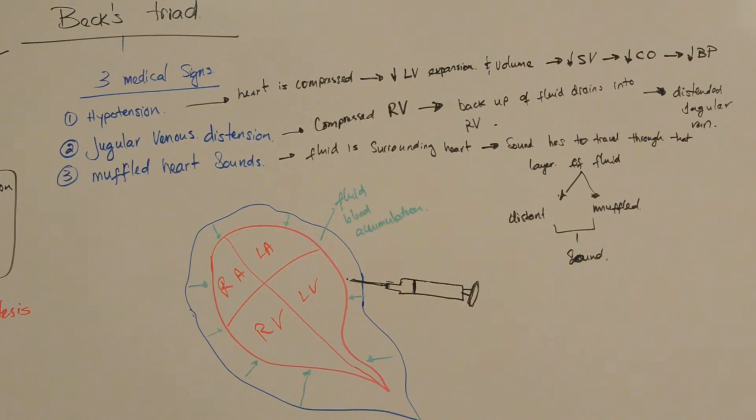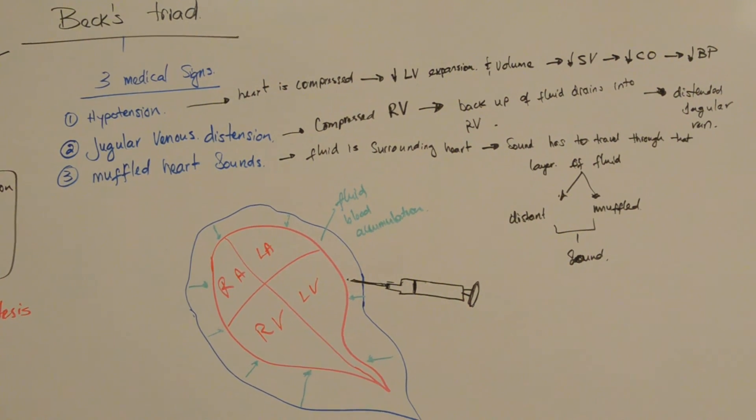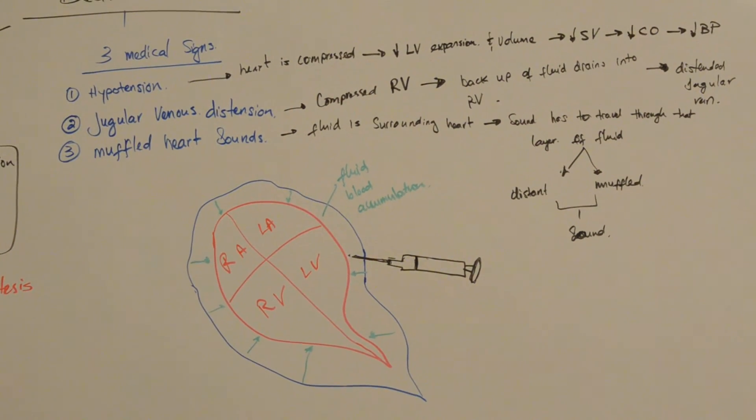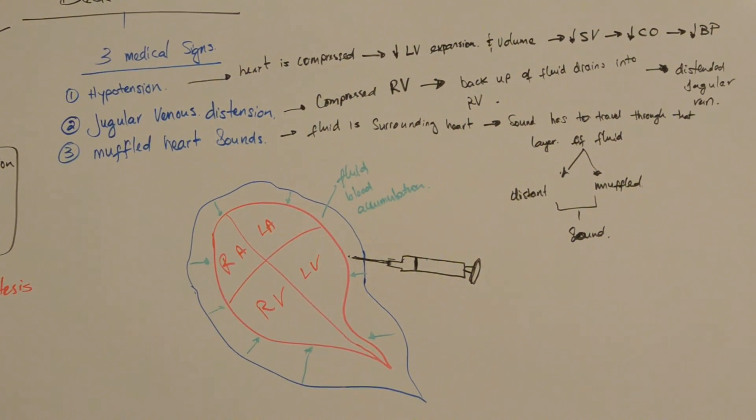Because we have less end-diastolic volume, the filling volume of the left ventricle is decreased because of the pressure exerted on the heart by the fluids that accumulate in the pericardium. There would be less stroke volume, and decreased stroke volume leads to decreased cardiac output.